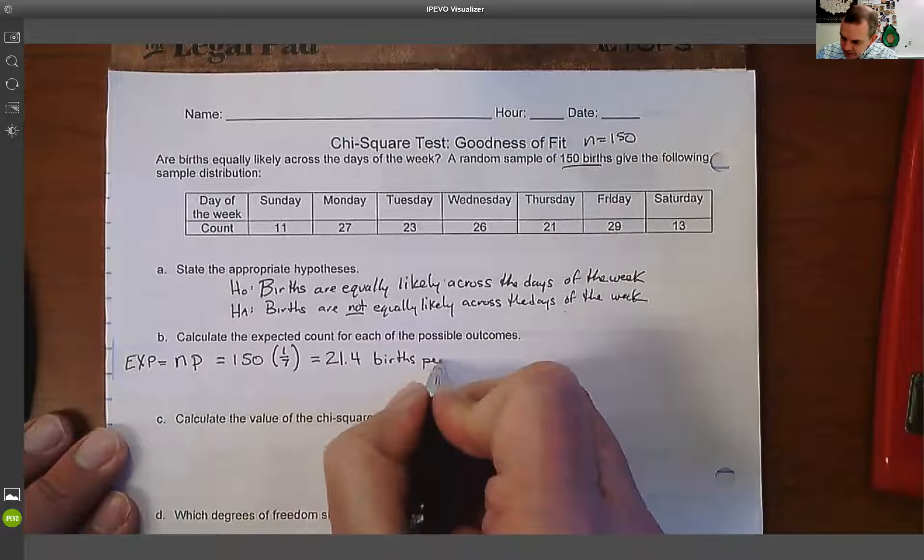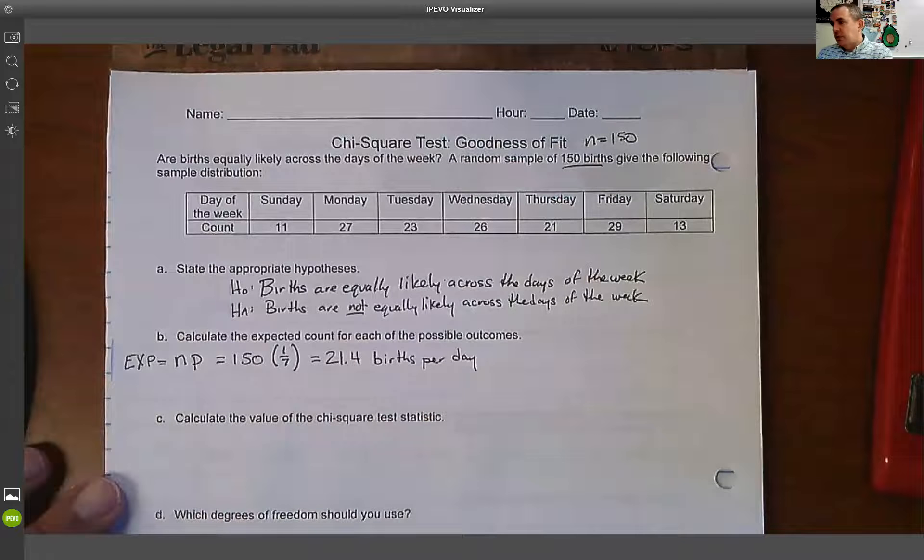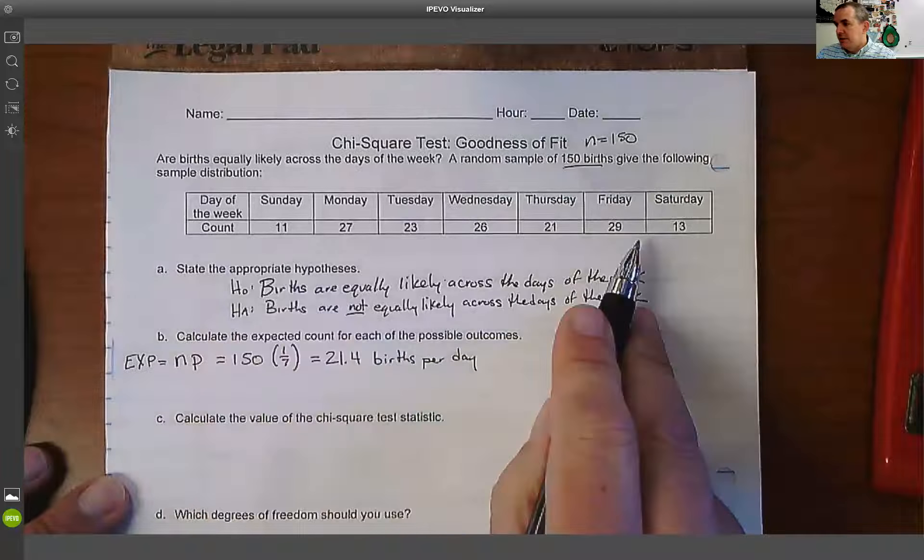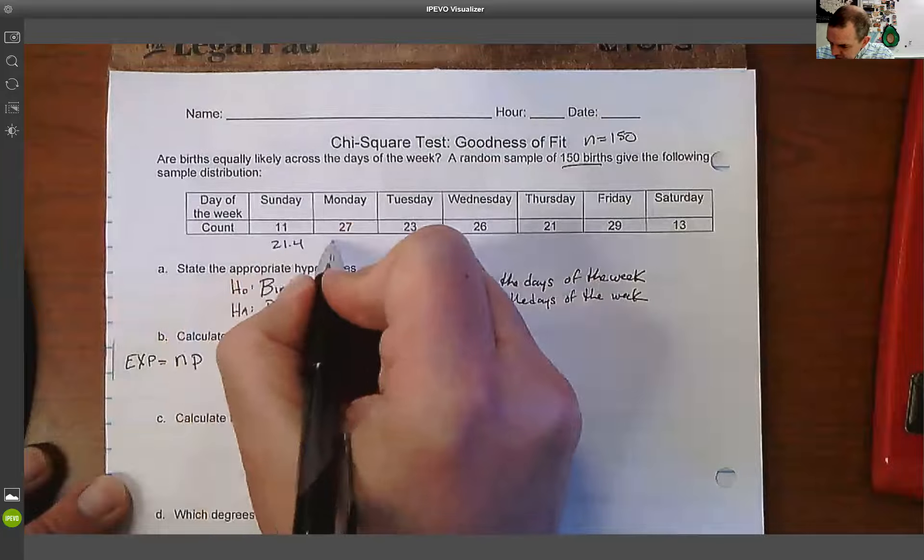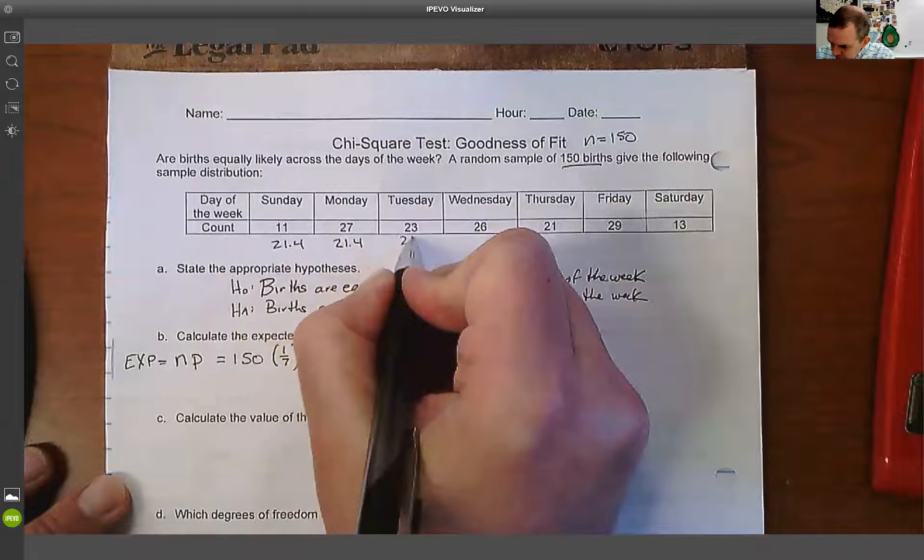So that's going to tell me we're going to have 21.4 births per day. So that's our expected. So what we're going to do is we're going to compare every single one of these to that number. We're going to compare all of these to 21.4.